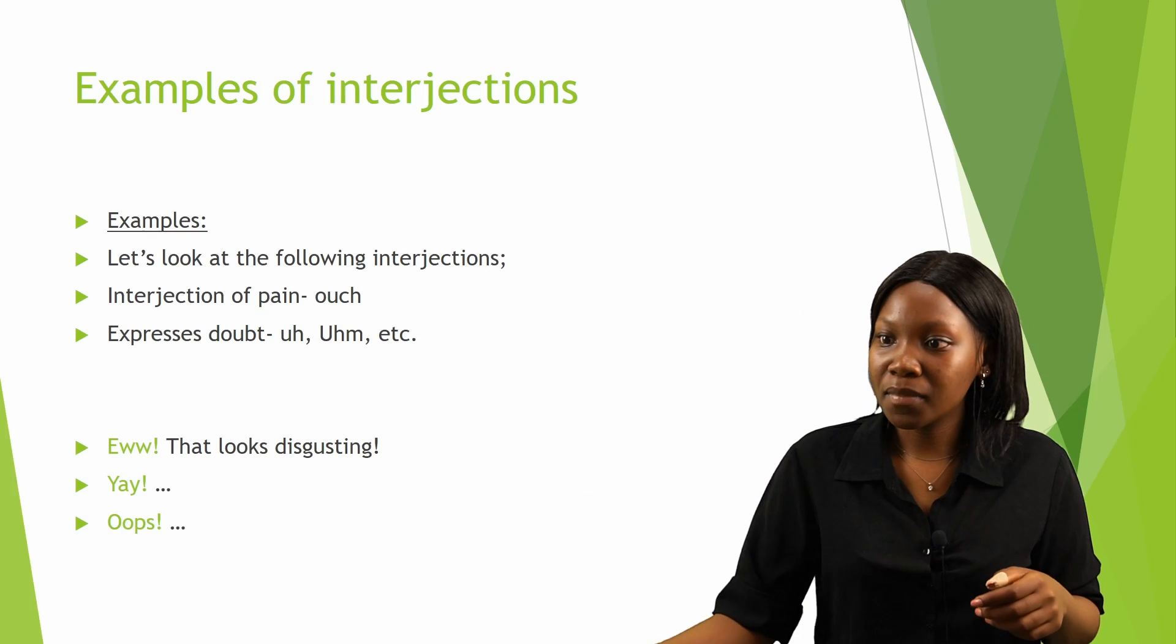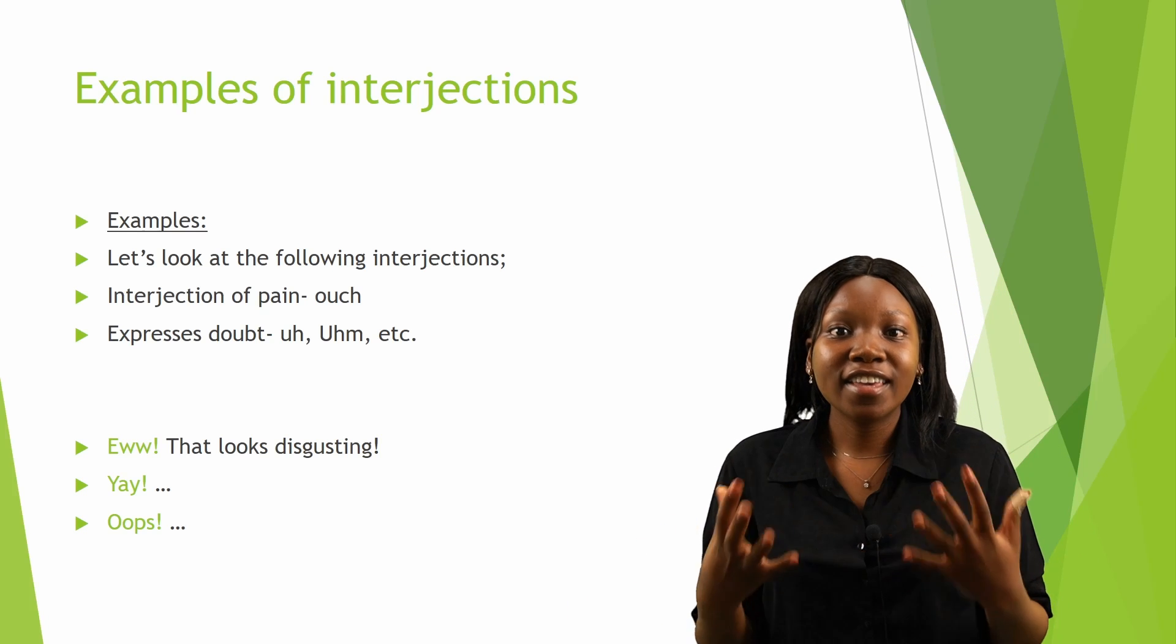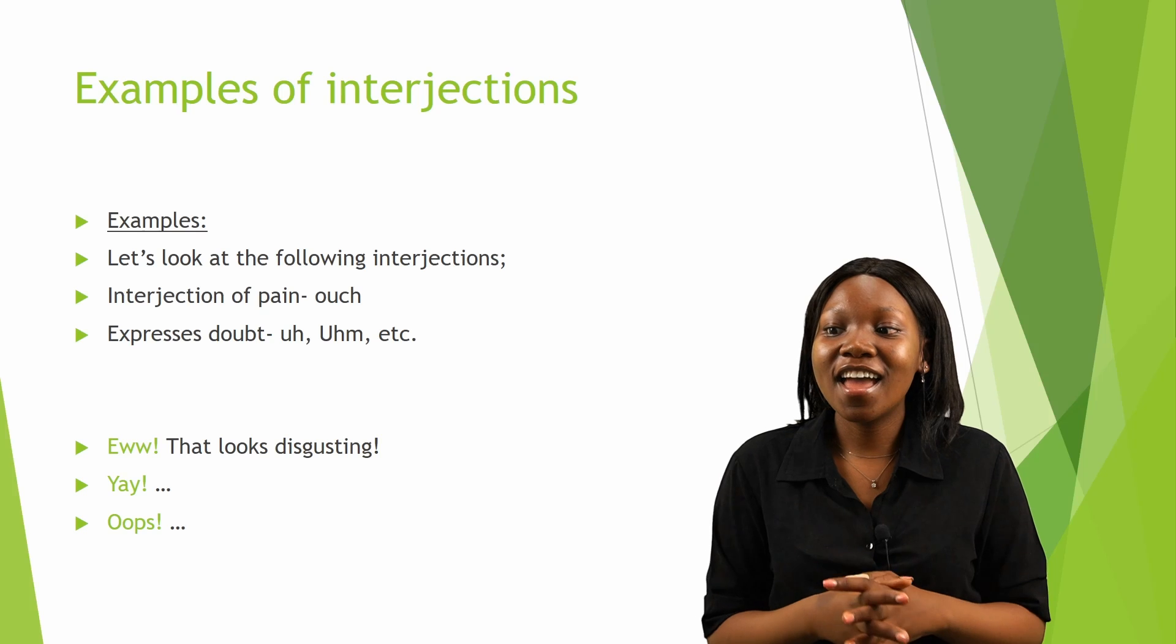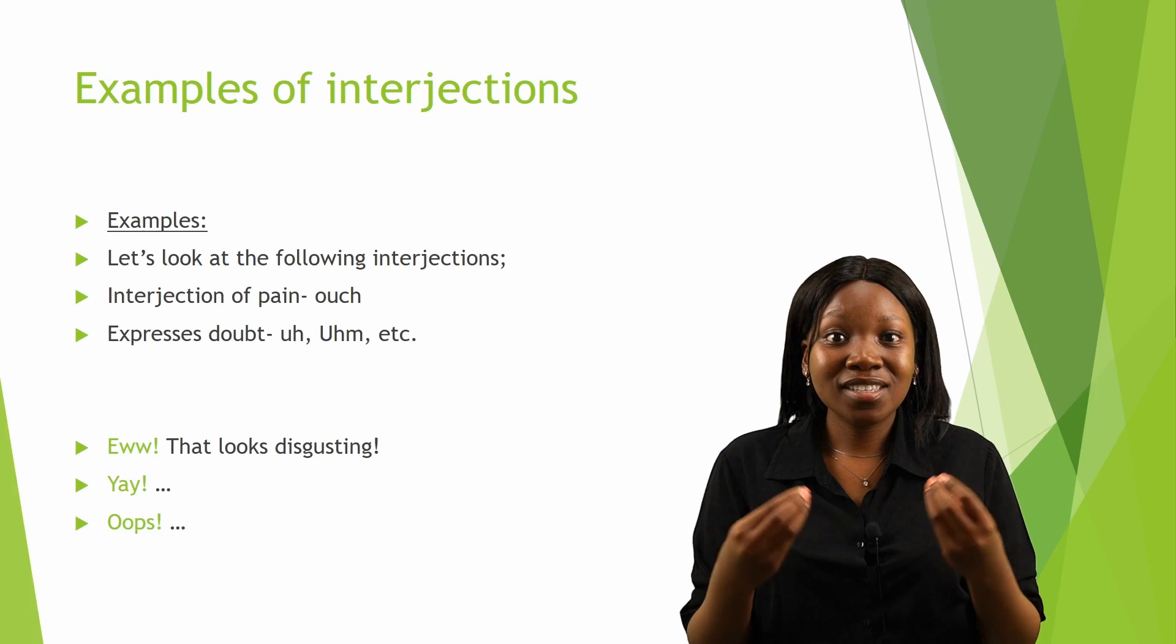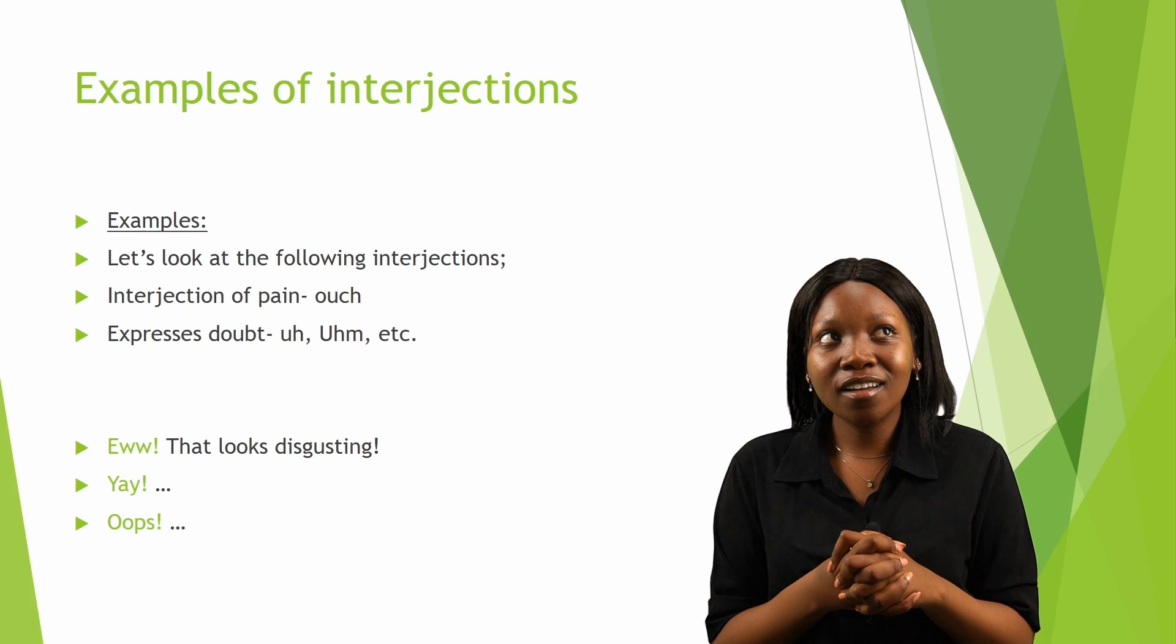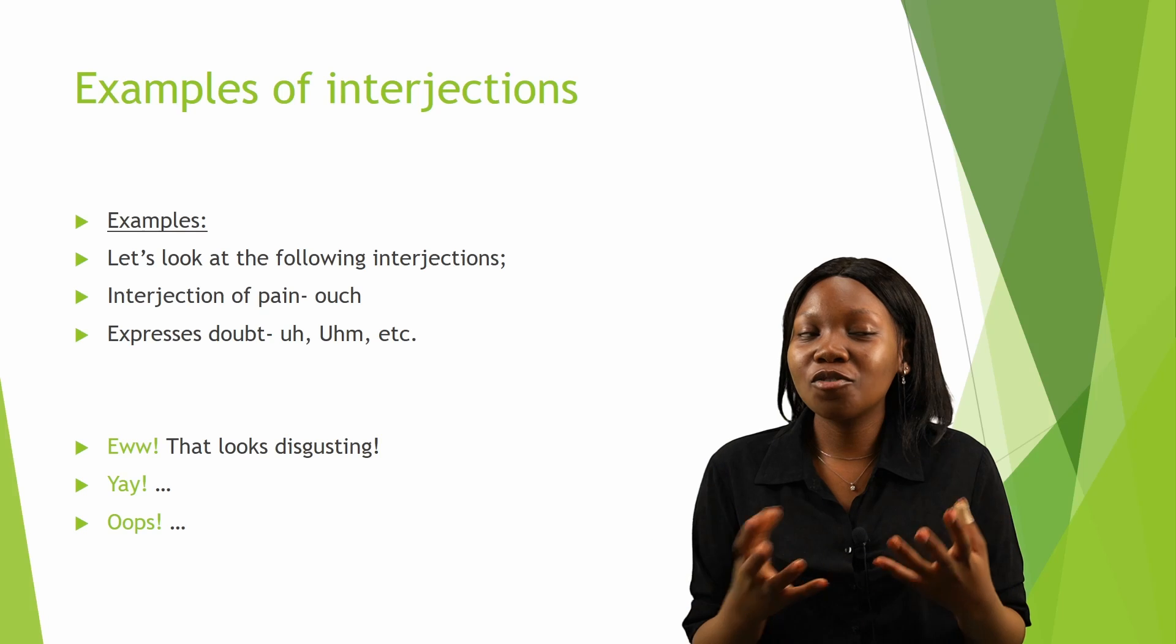Now let's look at the examples. We have an interjection of pain, which can be 'Ow!', and then we have interjections that express doubt, which will be like 'Uh,' 'Um,' and so on. When somebody starts to say that, you can see they are doubting what you are saying or what is being said.